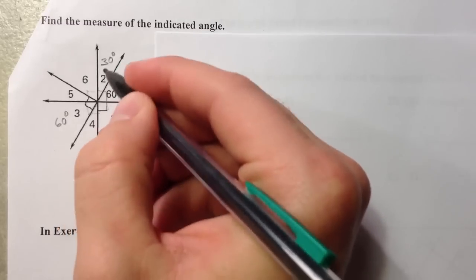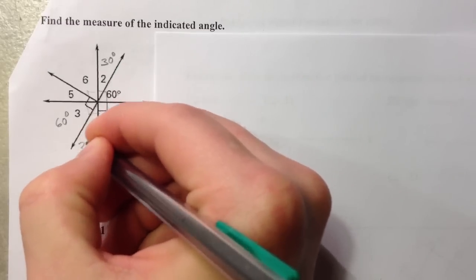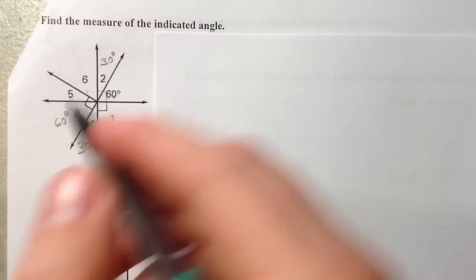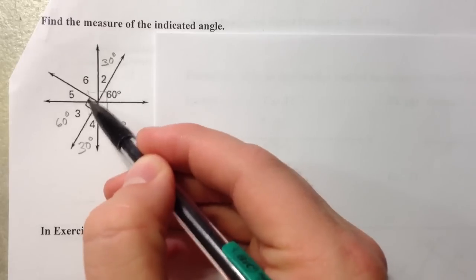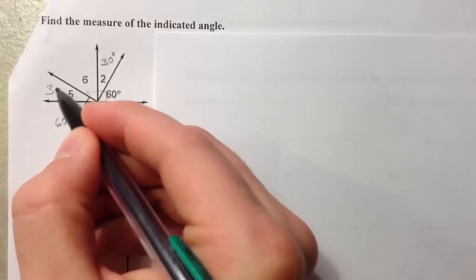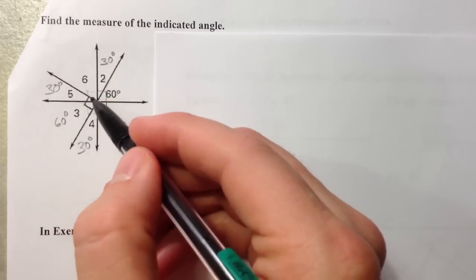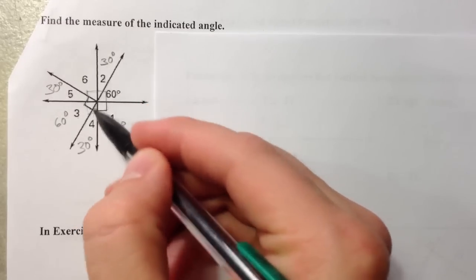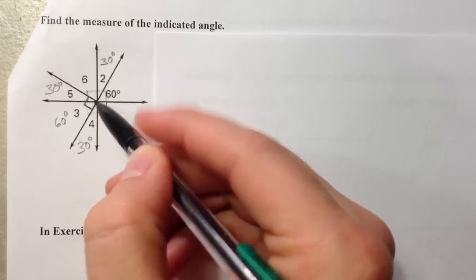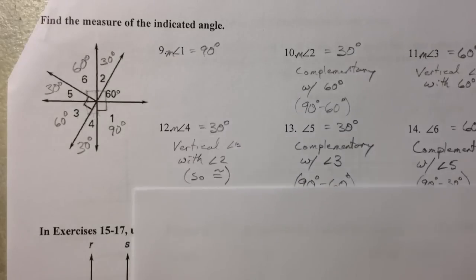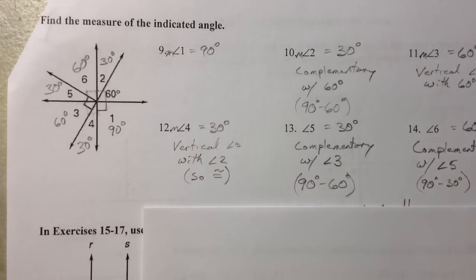Angle 4 is vertical with angle 2, so angle 4 is 30. Because we know this means it's a right angle, angles 3 and 5 must be complementary, so angle 5 must be 30 degrees. Because angles 5 and 6 are complementary — since all of these were right angles from the perpendicular — angle 6 must be 60. The reasons involve vertical angles, complementary angles, and vertical angles again.